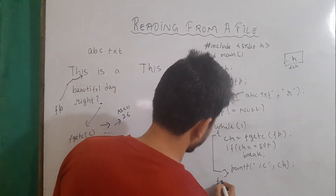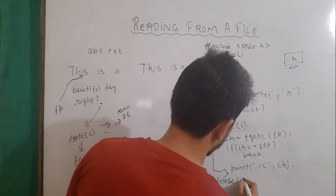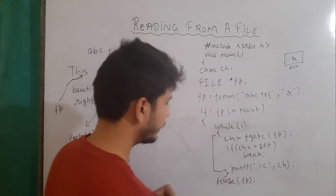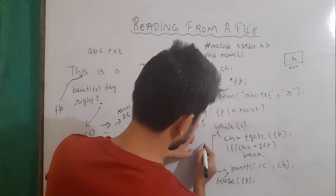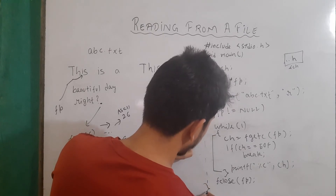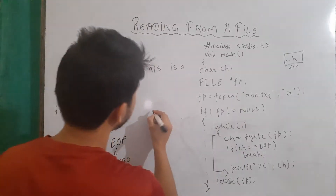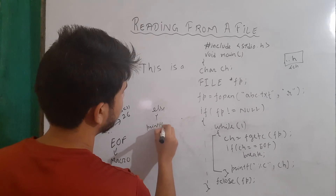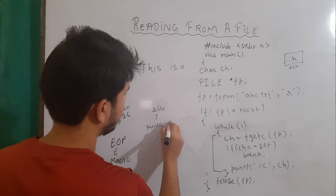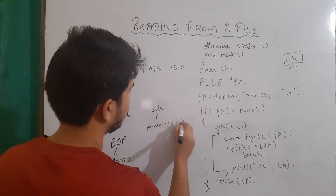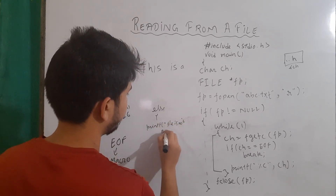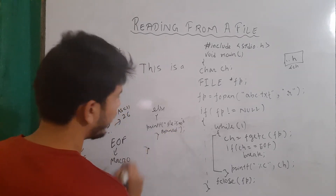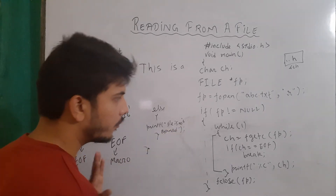After that, I will write fclose(fp) to close the file. Then I will close this if block. In the else part, you can write printf "file is not opened". And this will be the end of our program.